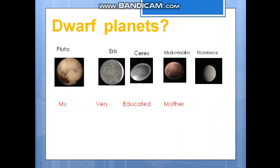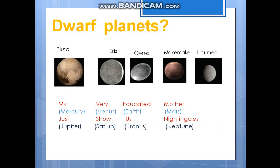Now we will learn how to remember the eight planet names using a mnemonic: 'My Very Educated Mother Just Saw Us 19 Years.' My means Mercury, Very means Venus, Educated means Earth, Mother means Mars, Just means Jupiter, Saw means Saturn, Us means Uranus, and 19 Years stands for Neptune.